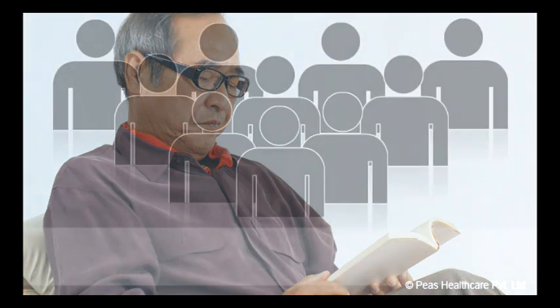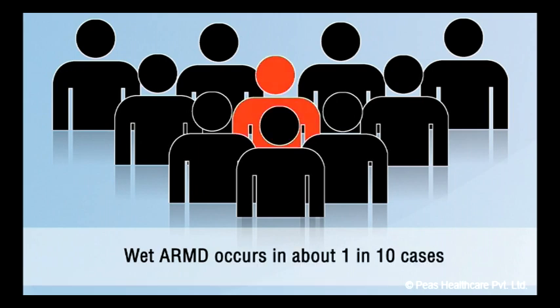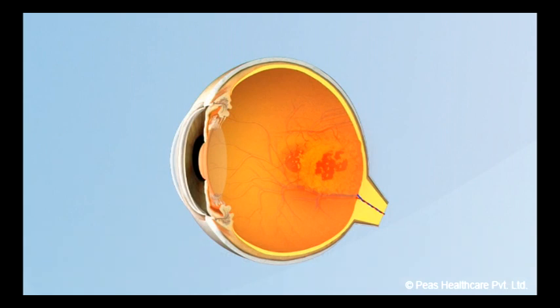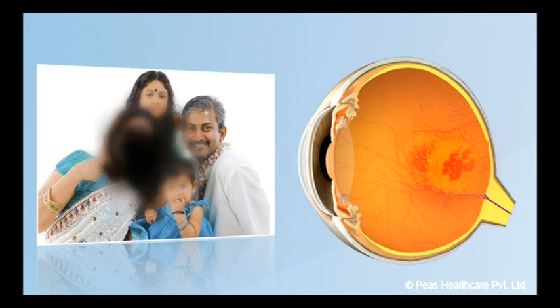Many people with dry ARMD do not totally lose their reading vision. Wet ARMD occurs in about 1 in 10 cases. However, it is likely to cause severe visual loss over quite a short time, sometimes just months.